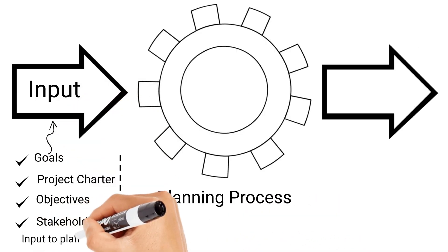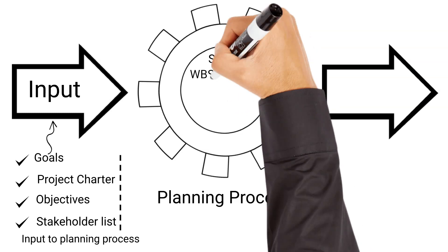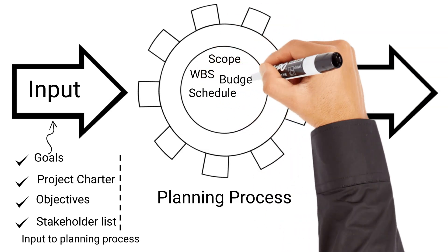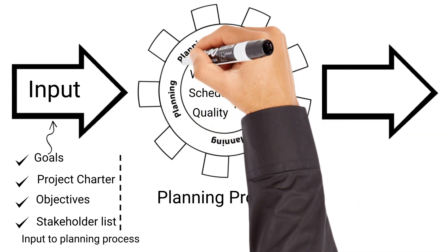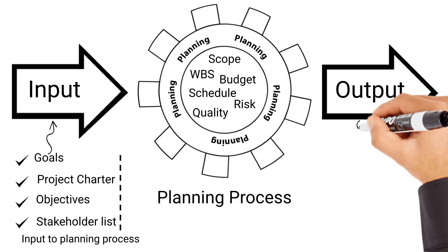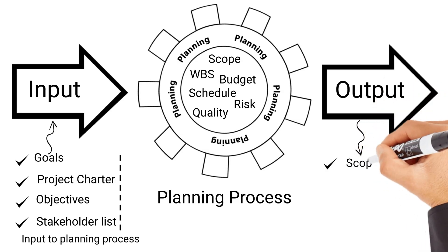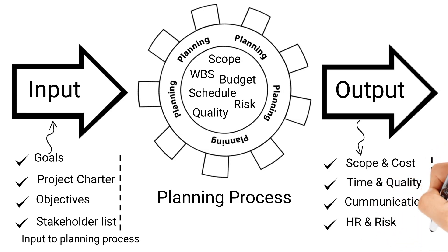The project manager needs to consider scope planning, WBS development, schedule development, budget planning, quality, and risk planning as part of the planning process. The main purpose of project planning is to guide the execution. The output of the project planning process includes the project integration plan, scope and cost management plan, time and quality management plan, HR and risk management plan, and other plans like quality and communication.